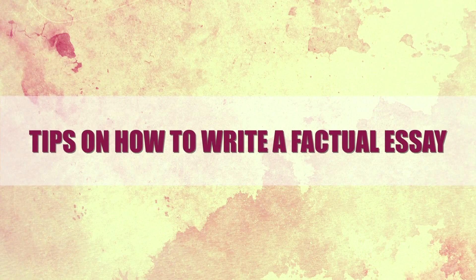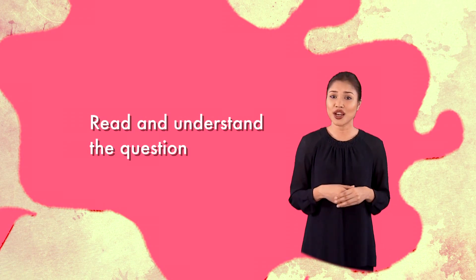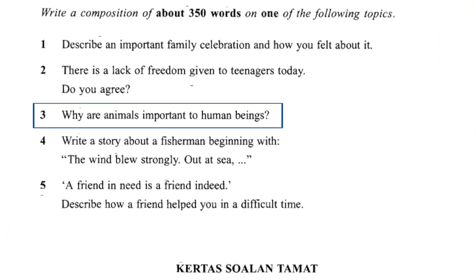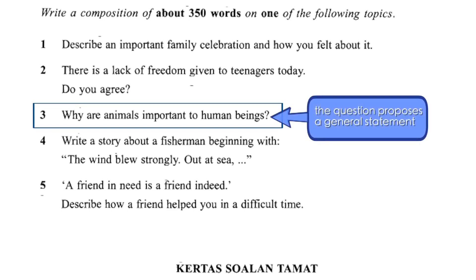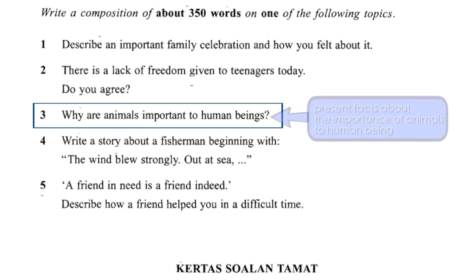Tips on how to write a factual essay. First, read and understand the question. As always, before writing any essay, you should read and understand what the question wants. For example, let's study this essay question — it appeared in the SPM English language paper in 2014: 'Why are animals important to human beings?' You can tell that this is a factual essay because the question proposes a general statement. Remember, you are not required to pick a stand as required in an argumentative essay. All you have to do is present facts about the importance of animals to human beings.